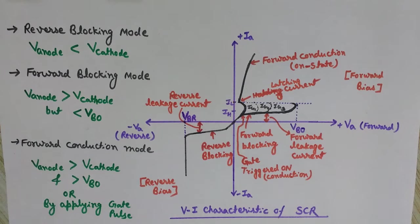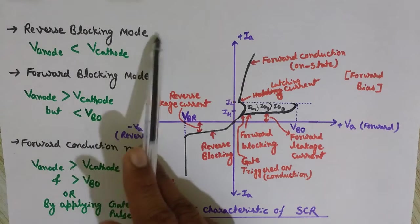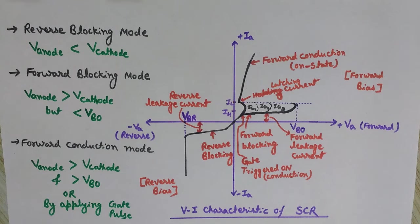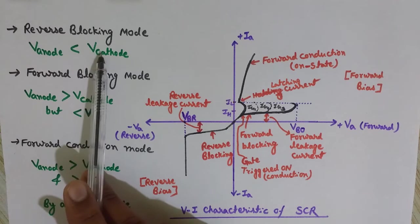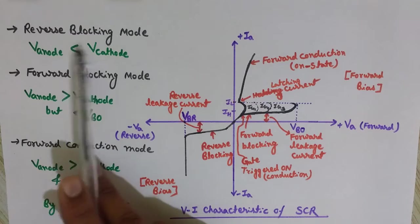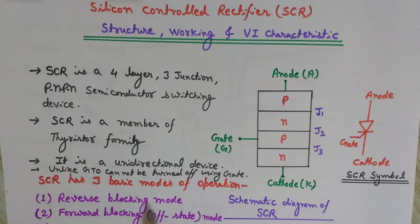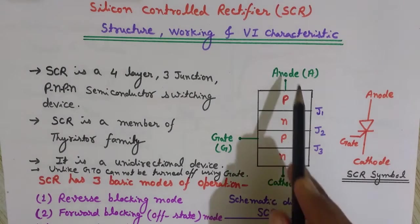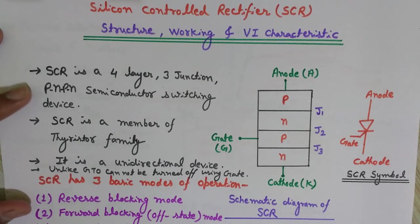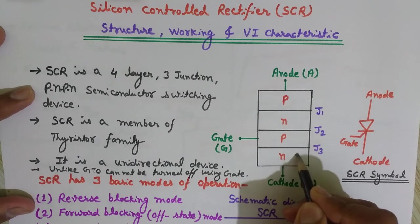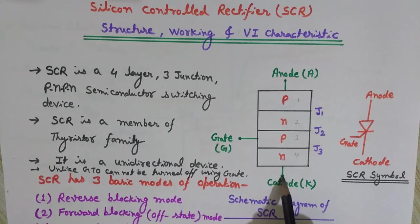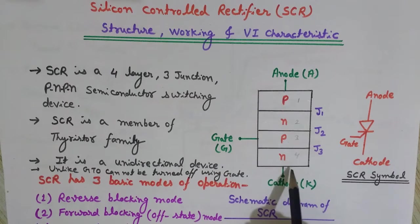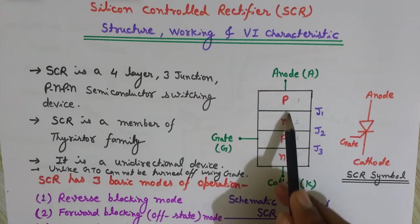In the reverse blocking mode, the cathode is made positive with respect to the anode — the voltage at the cathode is higher than at the anode. To make it easier to understand, let's assume the potential is 4 volts at the cathode side, decreasing as 3, 2, and 1 towards the anode, so the potential is higher at cathode and lower at anode.